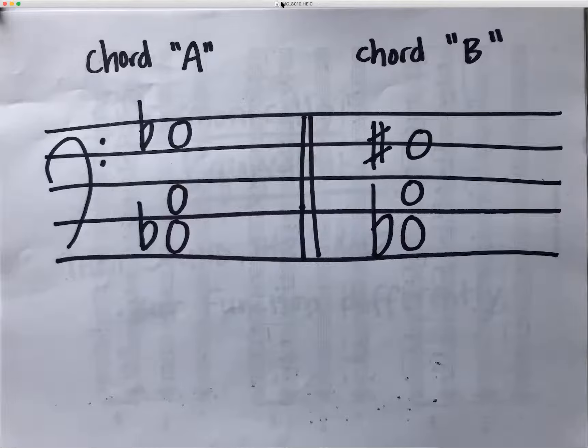What we're going to do today is exploit this enharmonicism as a means of modulation. What does that mean? We can take any five seven and reinterpret it as an augmented sixth chord in a new key. Likewise we can take any augmented sixth chord, re-spell it, and get a five seven in a new key to go to a lot of distantly related key areas.